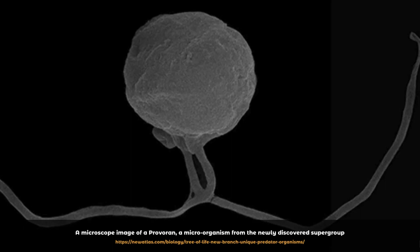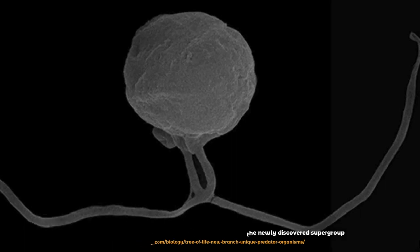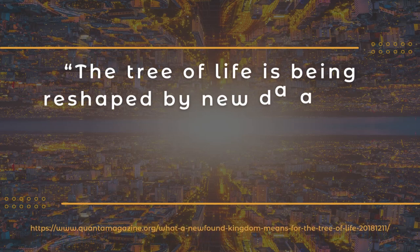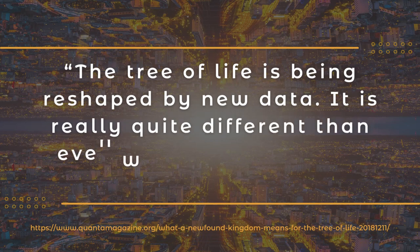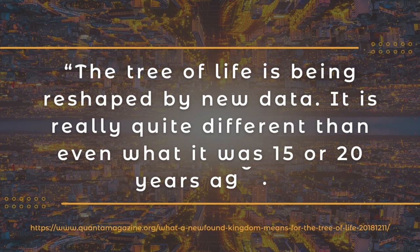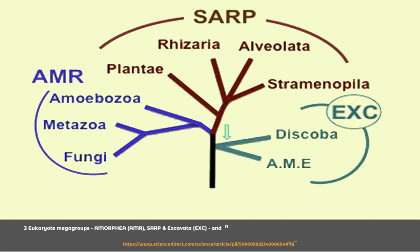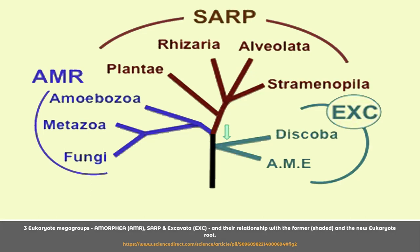Scientists also think we have much more of the tree of life to uncover, largely because of how quickly it's changing. The tree of life is really quite different than even what it was 15 or 20 years ago — we're seeing a tree with many more branches than we thought. Finding a lineage as distinct as hemimastigotes is still relatively rare, but if you go down a level or two on the hierarchy to the mere kingdom level — the one that encompasses, say, all animals — you find that new major lineages are popping up about once a year.